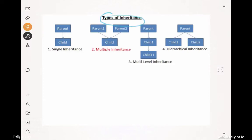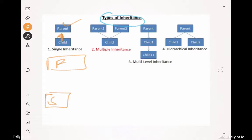When understanding inheritance, the parent can be an interface, an abstract class, or a class — it doesn't matter. Regarding the diagram, the arrow mark should point upward. For example, if there is a son and a father, the arrow should go upward from son to father. That is how we correctly illustrate inheritance.